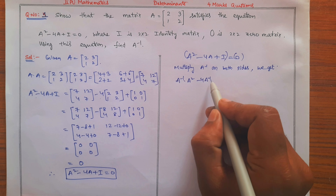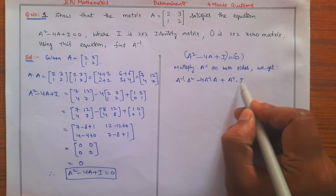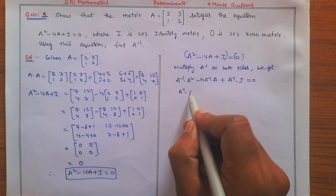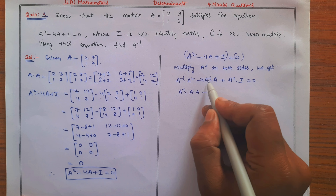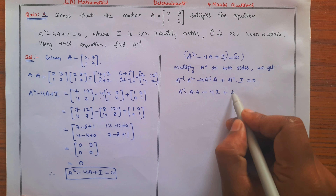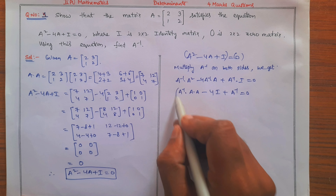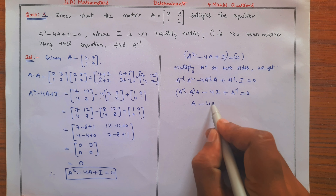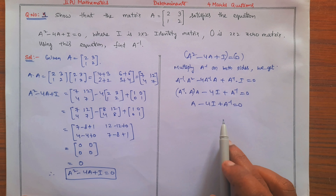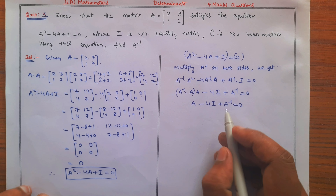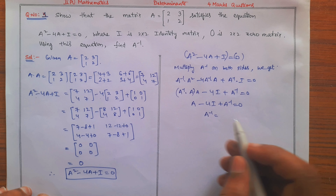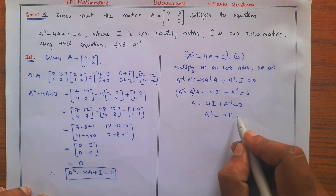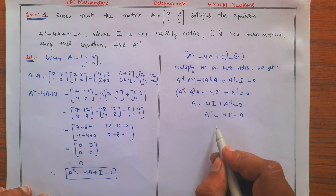Multiplying A inverse on both sides of A² − 4A + I = 0: A⁻¹·A² − 4·A⁻¹·A + A⁻¹·I = 0. Since A⁻¹·A = I, we get A⁻¹·A·A = I·A = A; so we have A − 4I + A⁻¹ = 0. Therefore, A inverse = 4I minus A.